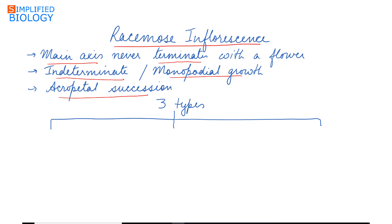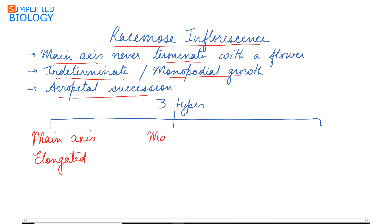Racimose inflorescence can be divided into three types: first, where the main axis is elongated; second, where the main axis is shortened; and third, where the main axis is flattened.